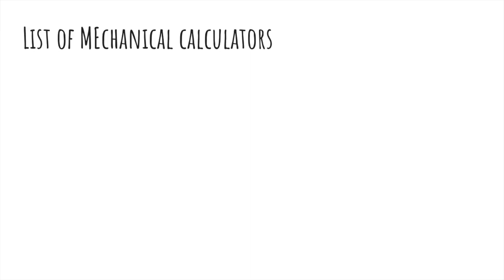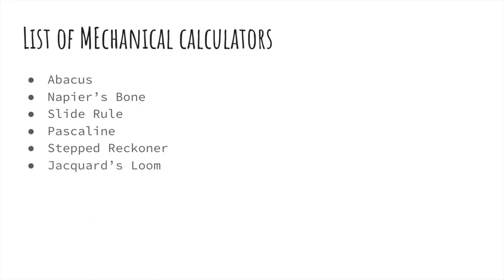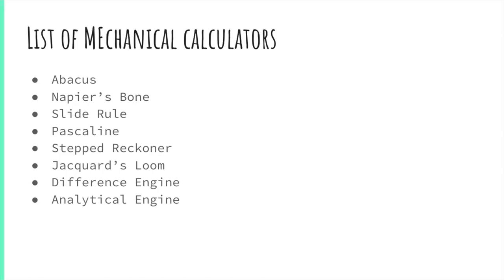Let's see the list of mechanical calculators. First one is Abacus. Second one is Napier bones. Third one is slide rule. Next one is Pascaline. Next one is Stepped Reckoner. Another one is Jacquard's loom. And we will also discuss about difference engine and analytical engine. These fall under mechanical calculators.